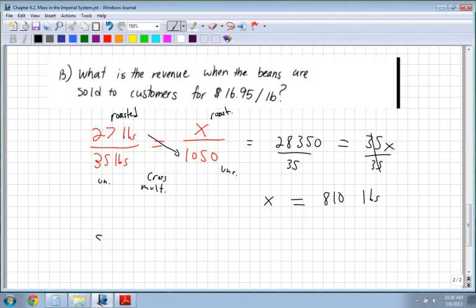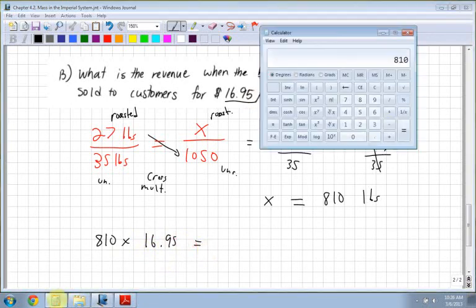So that means it's 810 times, now look, they're selling this time for $16.95 per pound, times $16.95 per pound. So 810 times $16.95 per pound,